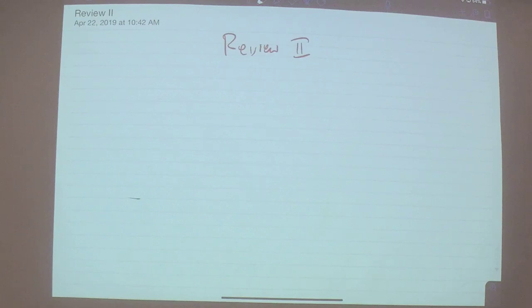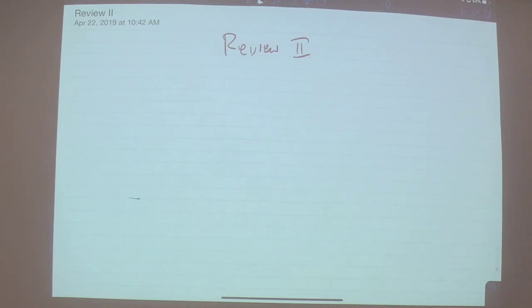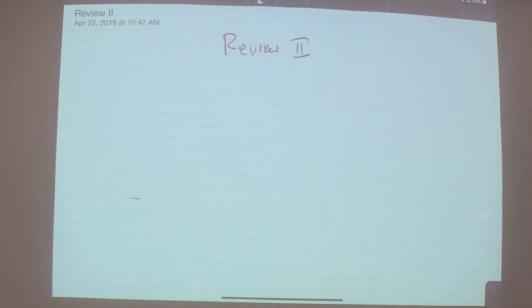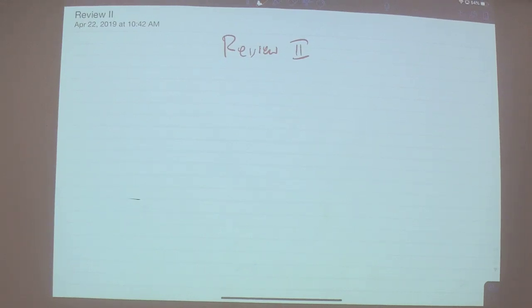We're continuing our review. Hopefully last time's review of the first part of the class was helpful. We covered references, dynamic programming, divide and conquer algorithms, and some network flows. Today I'm going to cover the rest — what I'd consider the more advanced material: randomization, optimization, and linear programming.